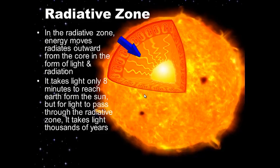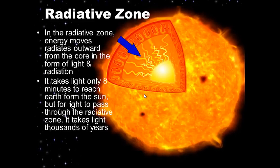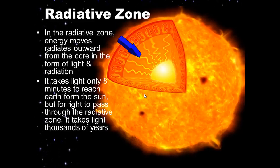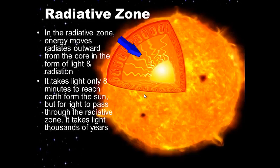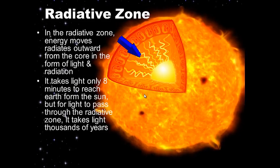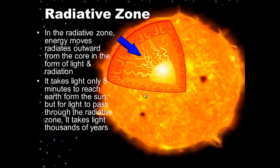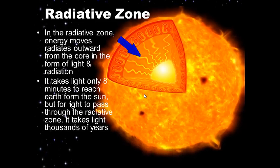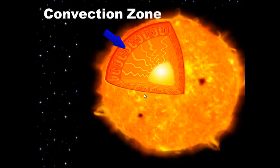Think of it like running through a classroom. With no people, you can run quickly. But in a classroom full of 80 people, you'll bump into others and may even bounce backwards — though ultimately you'll make it out. The classroom is denser, so it takes longer to get through. The same is true in the radiative zone: it's very dense and it takes light thousands of years to pass through. The temperature is about eight million degrees Celsius.